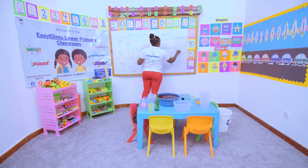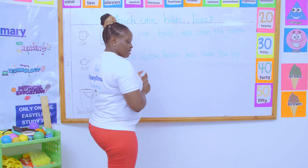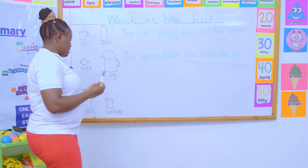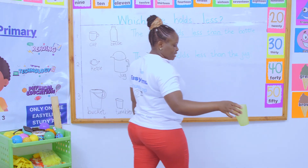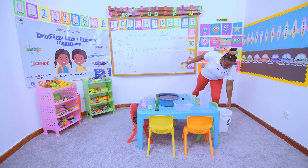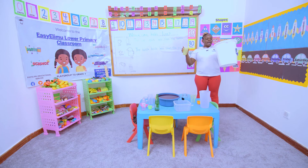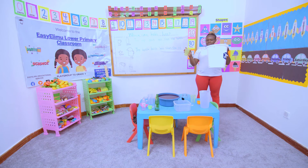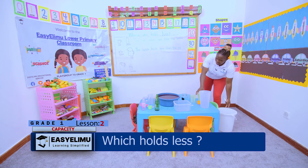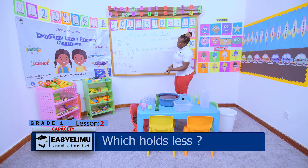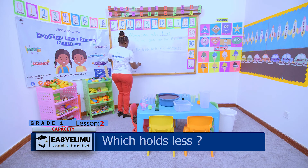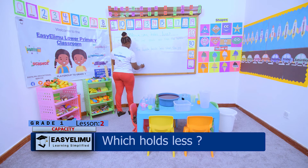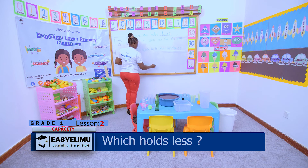Oscar, please do number three for us. You come and measure and tell us — the bucket is there, the tumbler is here. Compare this tumbler and the bucket, and tell me what can you say about the bucket and the tumbler. Oscar answered: Teacher, the tumbler holds less than the bucket.